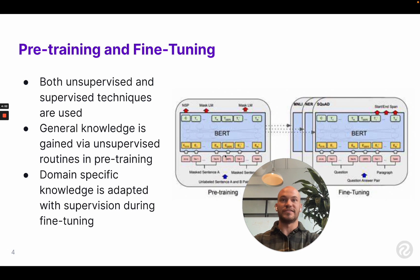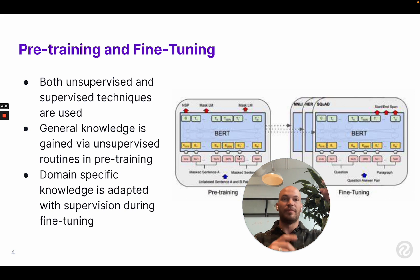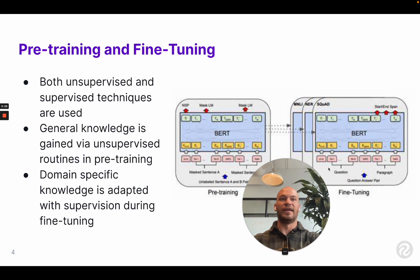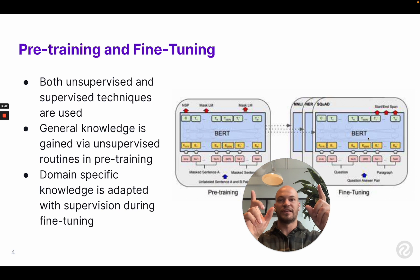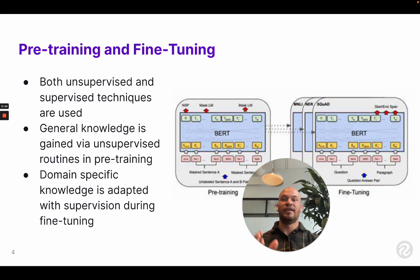And then after that's done, you can take that same set of neural network weights and the representations it's learned, lift them off, and then apply them to a new task. This is where you fine-tune into a specific dataset — and that's what fine-tuning is. Pre-training is unsupervised. Fine-tuning is supervised, pretty much always. And you can use these techniques in tandem.